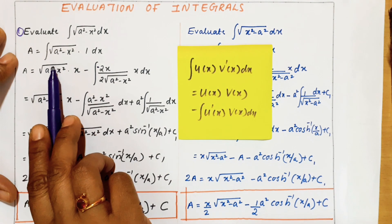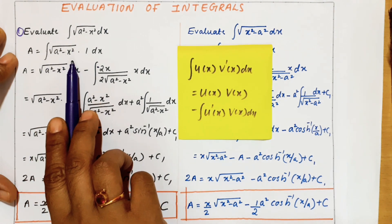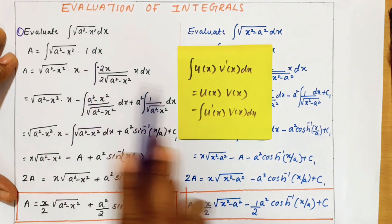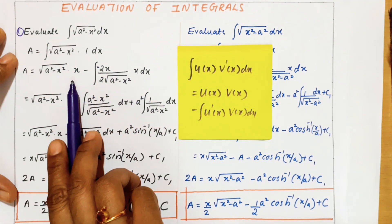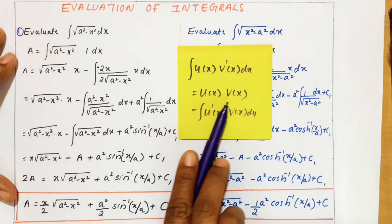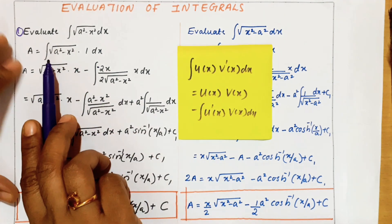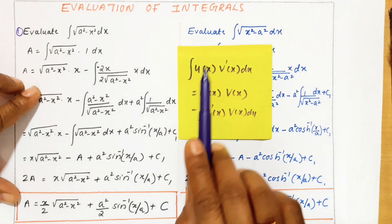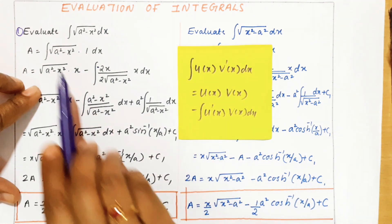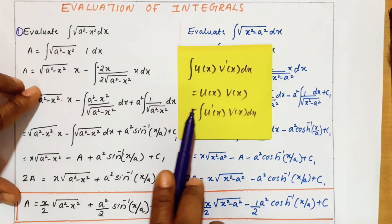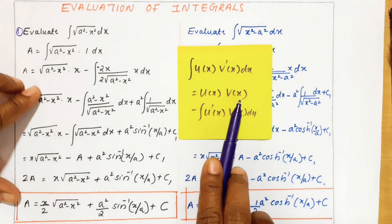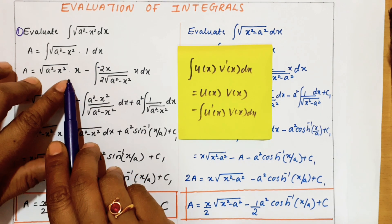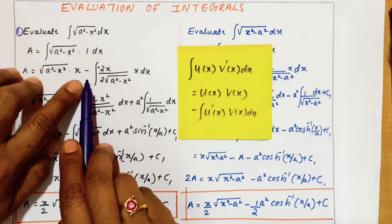So u(x) is the first term, that is √(a² - x²). v'(x) is 1, which means v(x) will be x. So I am going to expand in this form: integral of u·v' form. Its expansion is u·v, so u is √(a² - x²) into v which is x, minus the second term.